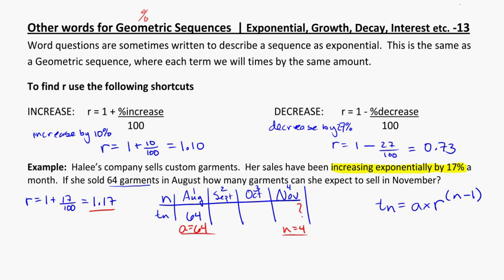So I'm looking for the number of garments she's going to sell in November. So I'm not looking for a total. I'm looking for the actual number of garments for just the month of November. That's going to be the fourth month, or the fourth term. A is equal to 64, and I'm going to times it by R, which is 1.17, to the power of, and N here is four, because November is the fourth month in the sequence. So N minus one, four minus one. And that's going to be equal to, when you plug it into your calculator, 102.5 garments.